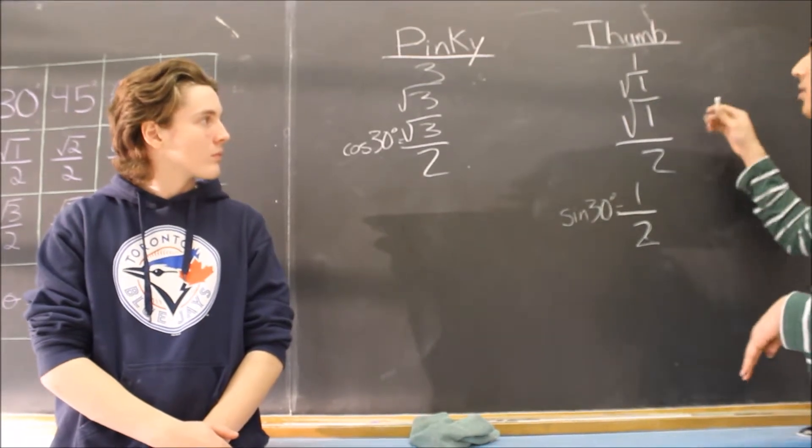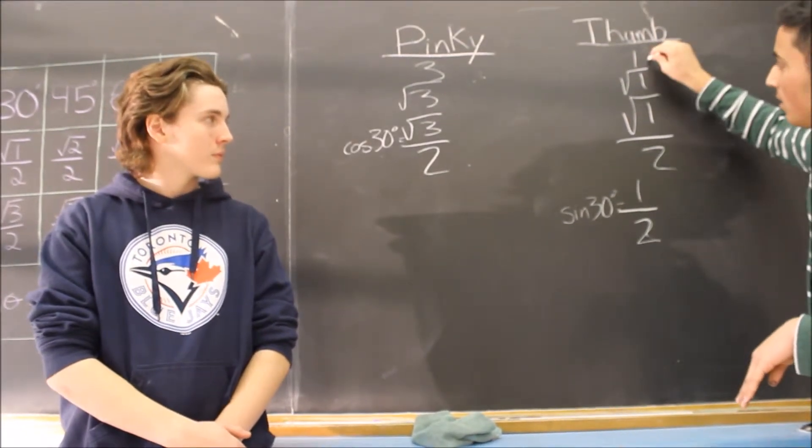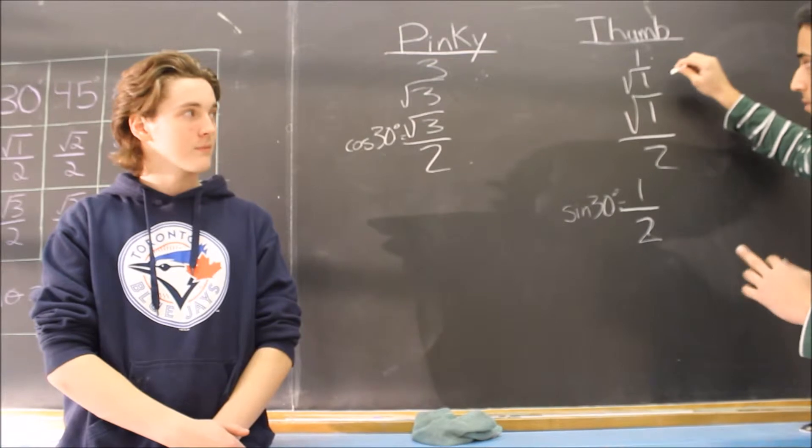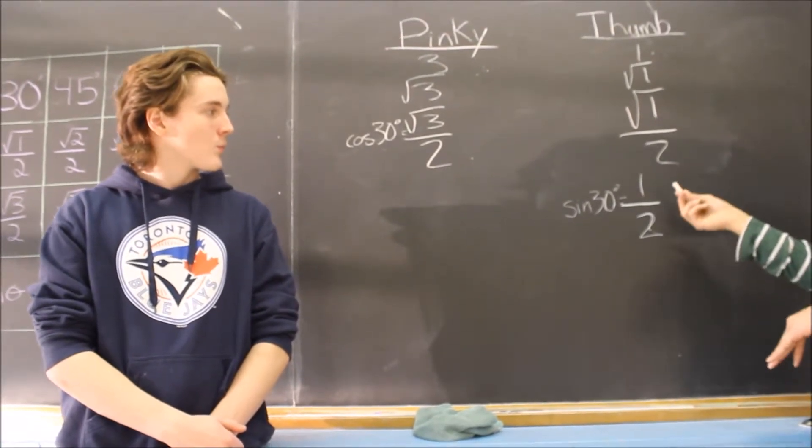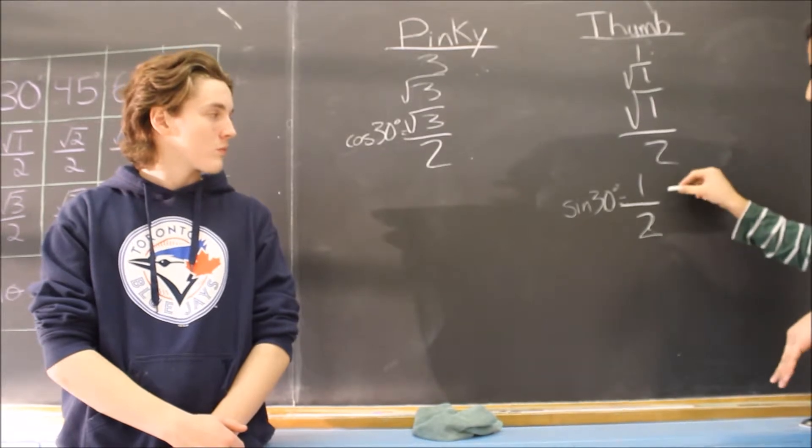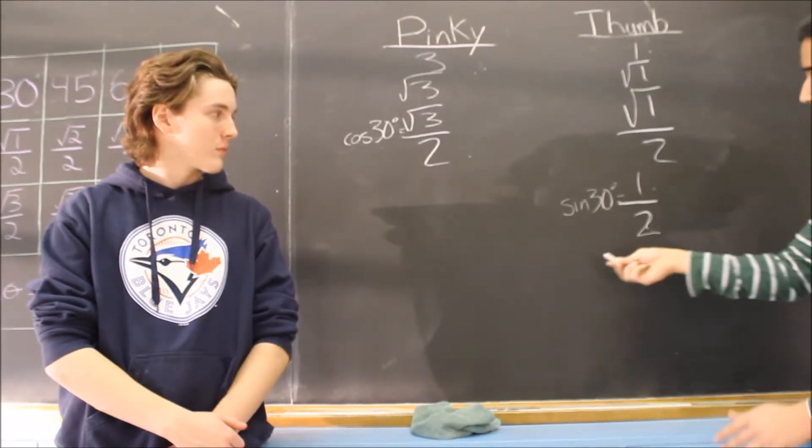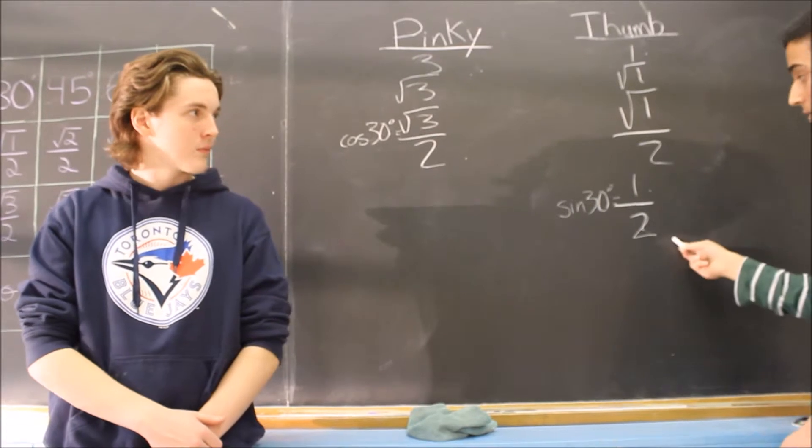Moving over to the thumb side, we get the value of 1. Then we have the square root of 1, then we're going to divide the square root of 1 by 2. And as we all know, 1 times 1 equals 1, so the square root of 1 is 1. And it gives us the answer of sine 30 degrees equals 1 over 2.